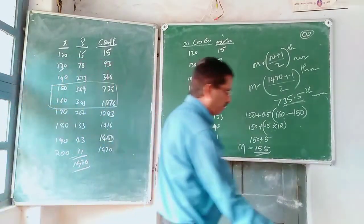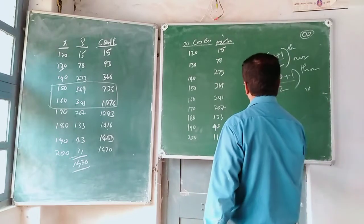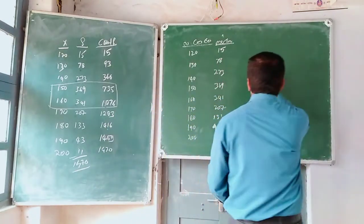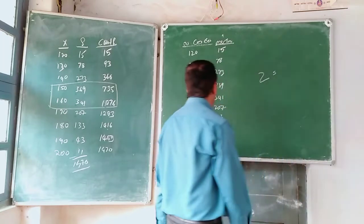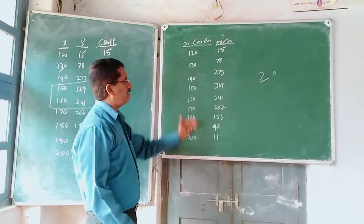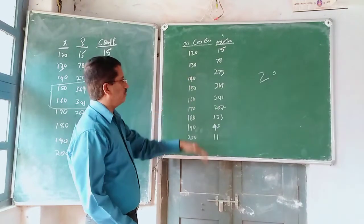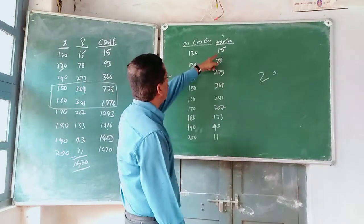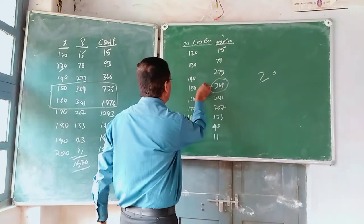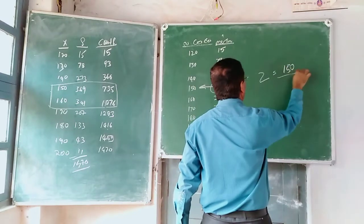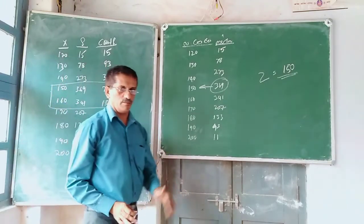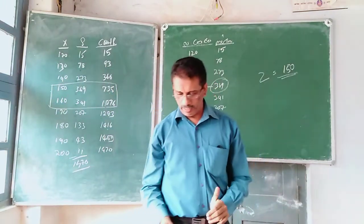The last one is called the mode. Mode is the highest repeated number — the most frequently occurring value. In this case, 369 is the highest frequency, so the corresponding value 150 is the mode. This is where we find mean, median, and mode in this type of problem.